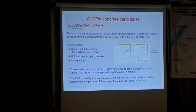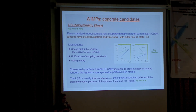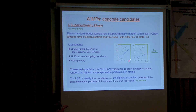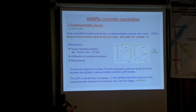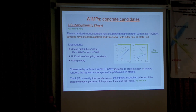Supersymmetry solves this because the supersymmetric particles cancel off the contributions from their standard model counterparts, keeping the weak scale down where it needs to be. There's also the unification of coupling constants: the coupling constants of the forces run with energy and look like they're going to unify, but in the standard model they don't quite. If you add supersymmetry, you get a nice unification at a scale of about 10^15 to 10^16 GeV. And apparently, if you want to do string theory and unify all the forces, supersymmetry turns out to be an important feature. So here's our particle physics model.